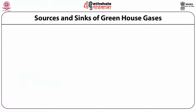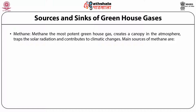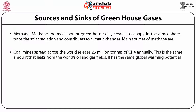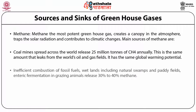Another greenhouse gas is methane — the most potent greenhouse gas — which creates a canopy in the atmosphere, traps solar radiation and contributes to climatic changes. Main sources of methane are coal mines spread across the world, which release 25 million tons of methane annually — the same amount that leaks from the world's oil and gas fields. Other sources include inefficient combustion of fossil fuels, wetlands including natural swamps and paddy fields, and enteric fermentation in grazing animals, which releases 30% to 40% methane.